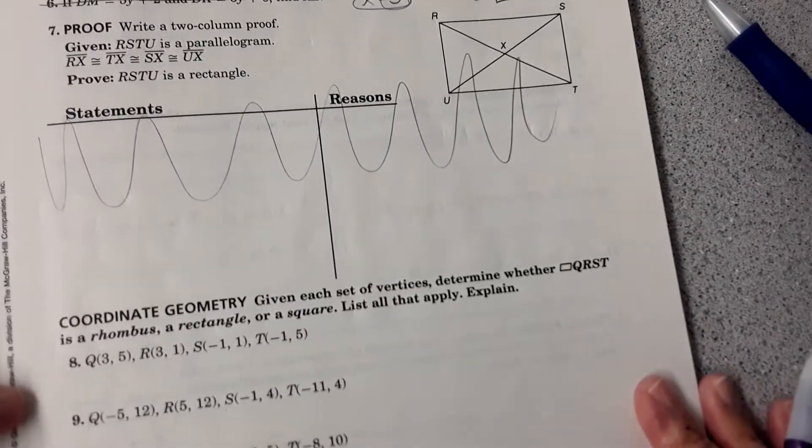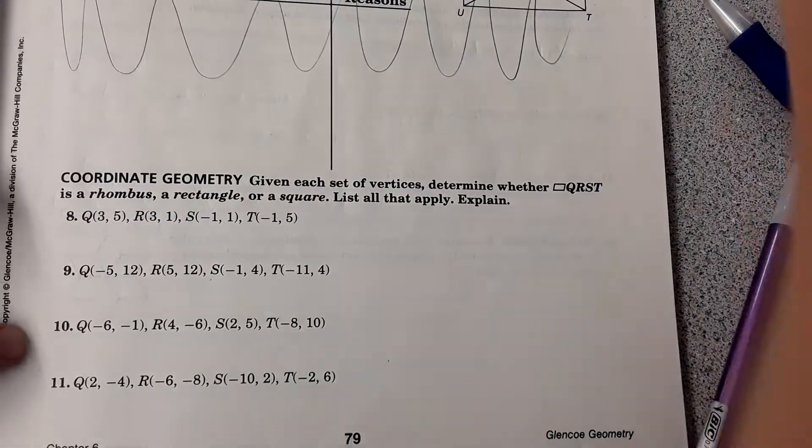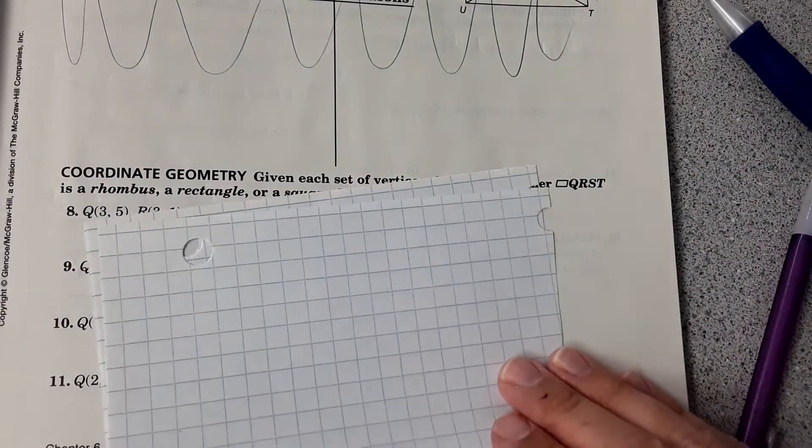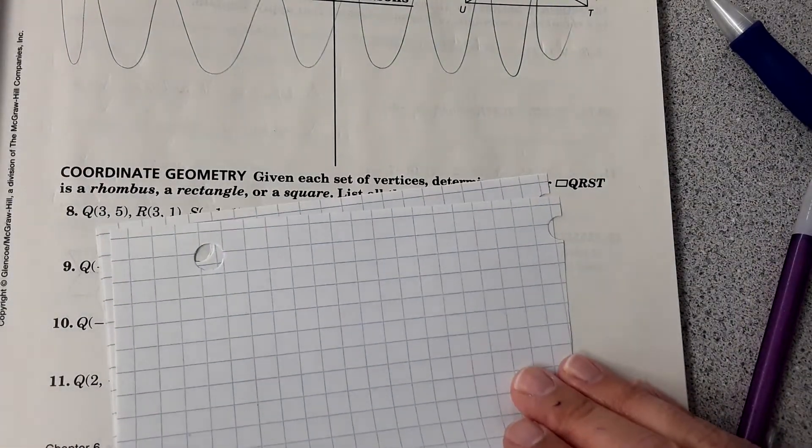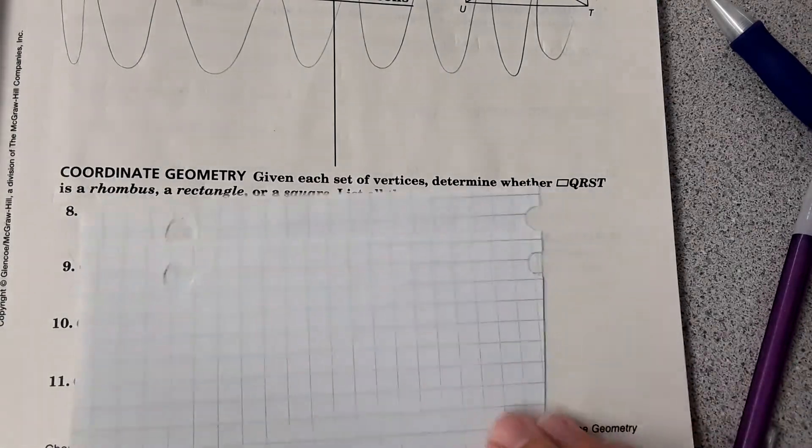Coordinate geometry. You may get some of these on the homework. What you would do is take some graph paper and just graph out the shape. And just by graphing it, you can see what the shape is, whether it's a rhombus or a rectangle or a square.